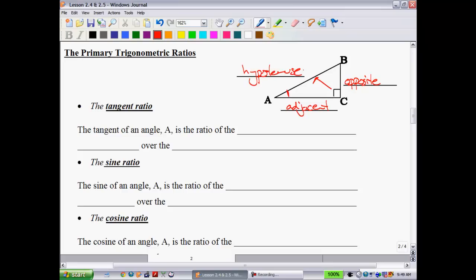So what we can say is for the tangent ratio, this tangent ratio we've already dealt with. The tangent ratio of an angle A is the ratio of the length opposite angle A over the length adjacent angle A. So that was our TOA. When you have the tangent ratio, it's opposite over adjacent.